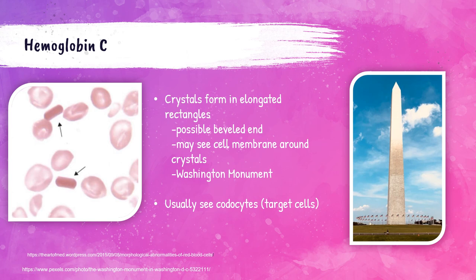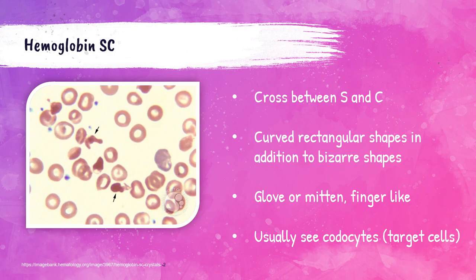The arrows in the photo point to hemoglobin C crystals. Hemoglobin C is an abnormal type of hemoglobin. These are very condensed elongated rectangular shapes that resemble the Washington Monument. You will often see target cells (codocytes) in patients that have these crystals. Hemoglobin SC crystals come from a cross between hemoglobin S and hemoglobin C — they can be curved rectangles or bizarre shapes that look like a mitten or finger-like projections. As with hemoglobin C crystals, you will frequently see target cells in the peripheral blood smear of patients that have hemoglobin SC crystals.